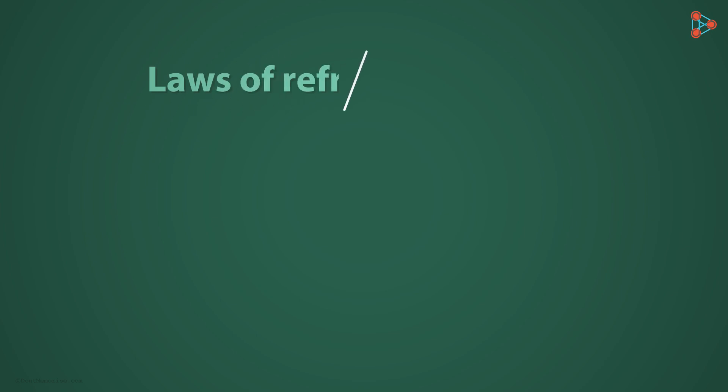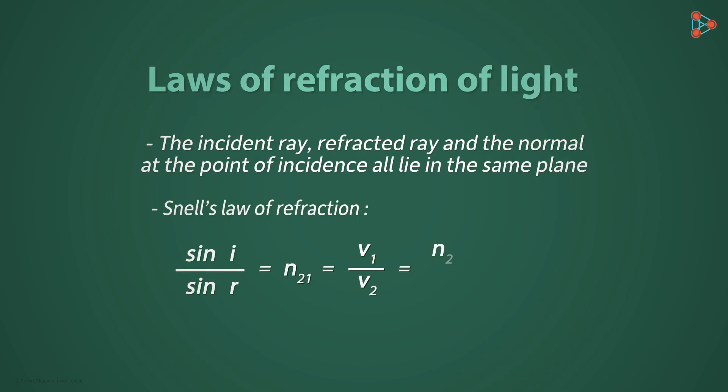These were the two laws of refraction of light we saw in our previous video. Snell's law tells us that this ratio is constant and is equal to the refractive index of medium 2 with respect to medium 1. And it is also equal to the ratio of speed of light in medium 1 to the speed of light in medium 2. And that is the same as the ratio of the absolute refractive index of medium 2 to the absolute refractive index of medium 1.